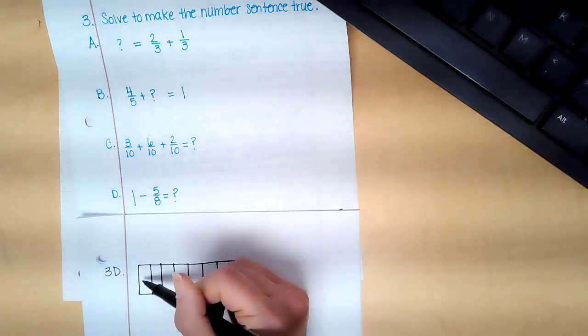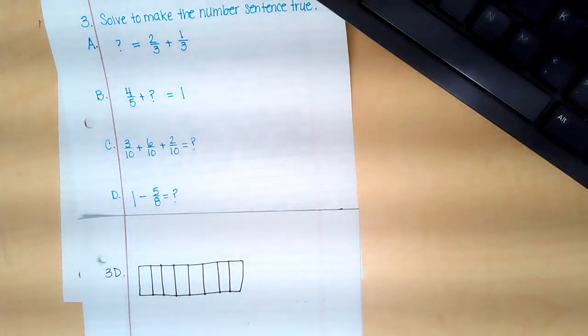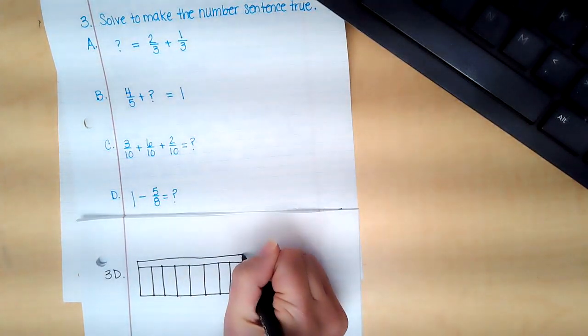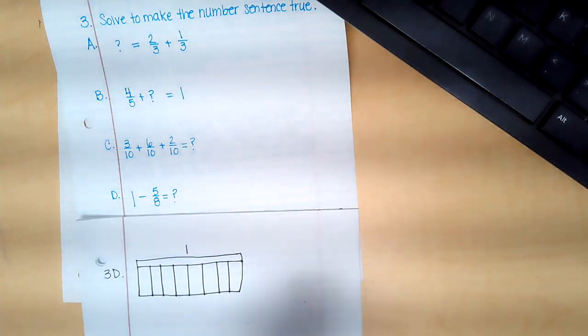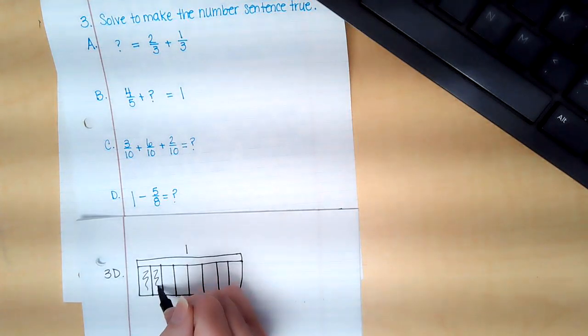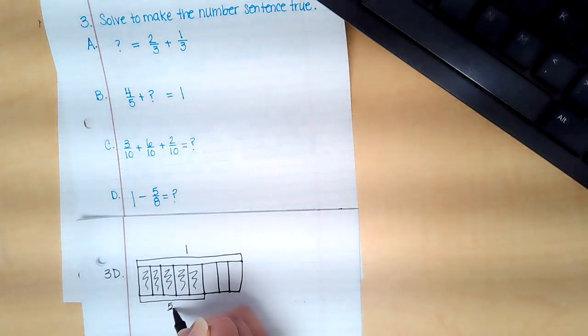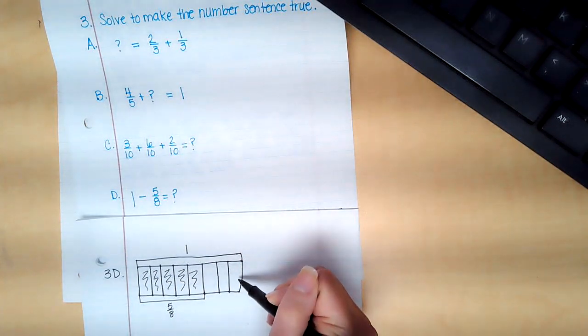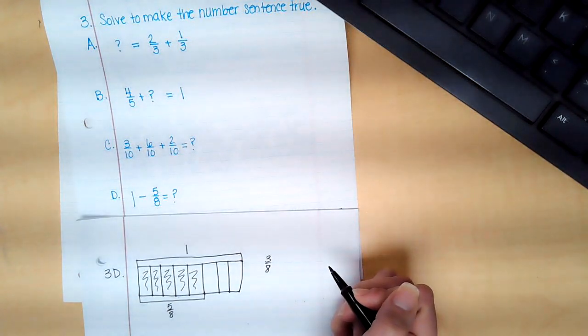You can double check by counting one, two, three, four, five, six, seven, eight. Okay, so if I say that one minus five eighths, the whole is eight eighths, right? And I'm taking away five of them, that's one, two, three, four, five. The question is how many are left? I have one, two, three eighths.